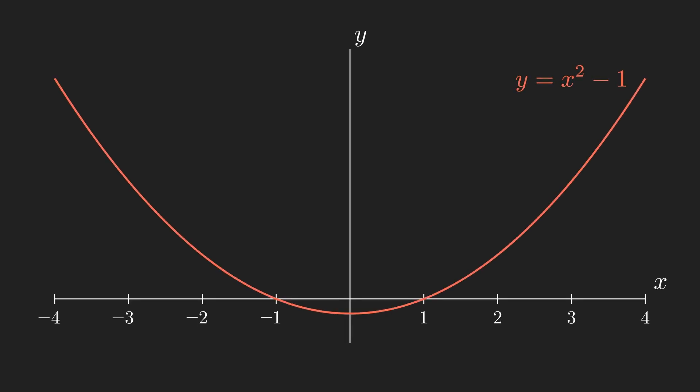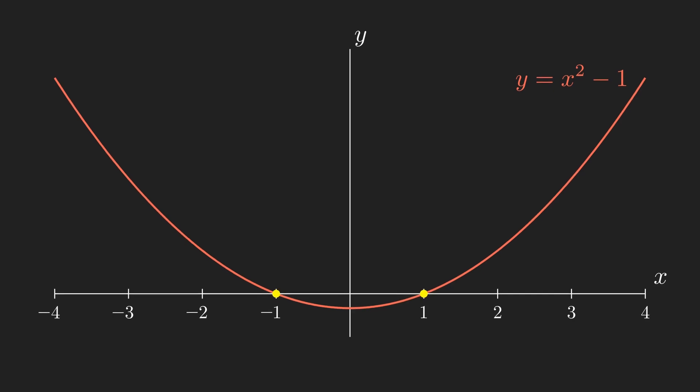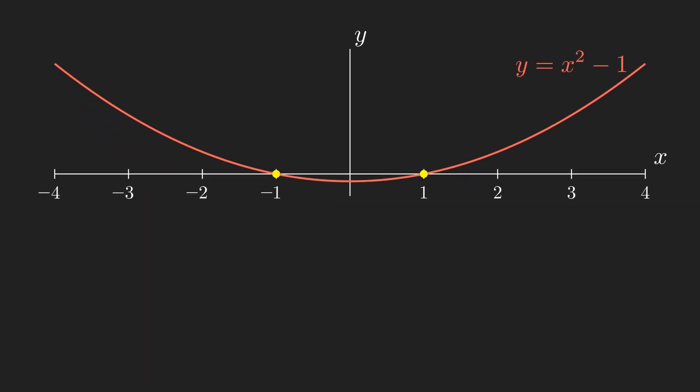y equals x squared minus 1 has the roots 1 and minus 1. You can also find these with simple algebra, by setting y equal to 0 and rearranging.